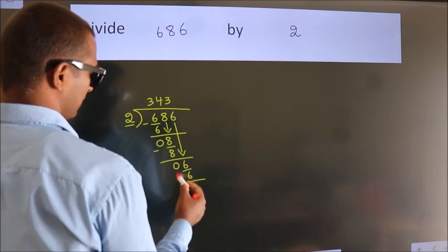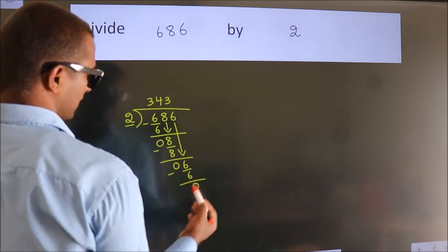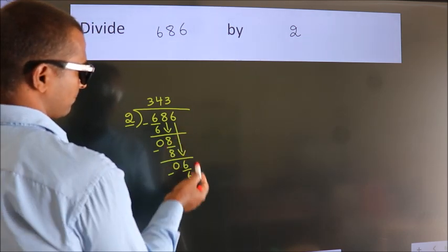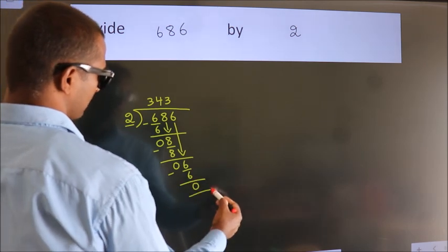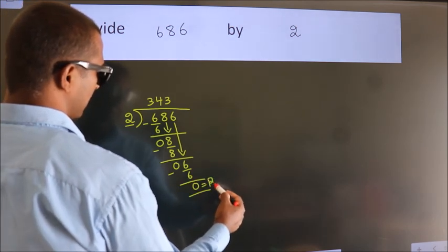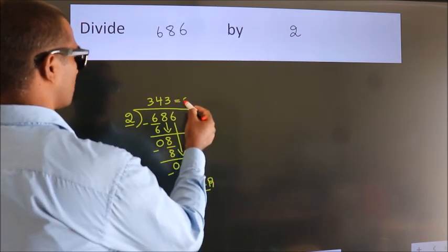Now we subtract. We get 0. No more numbers to bring it down. So we stop here. This is our remainder. This is our quotient.